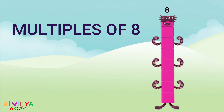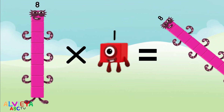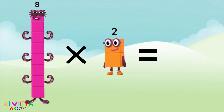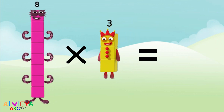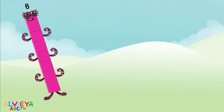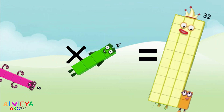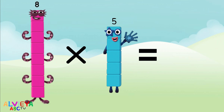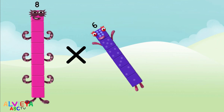Eight times one equals eight. Eight times two equals sixteen. Eight times three equals twenty-four. Eight times four equals thirty-two. Eight times five equals forty. Eight times six equals forty-eight.